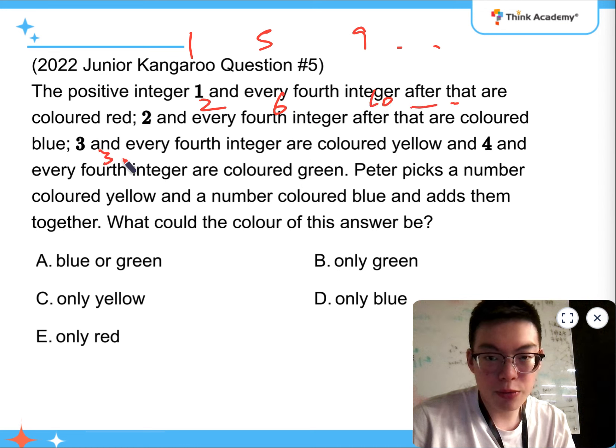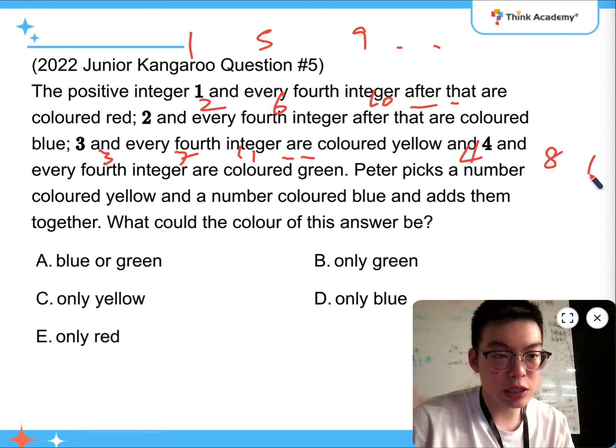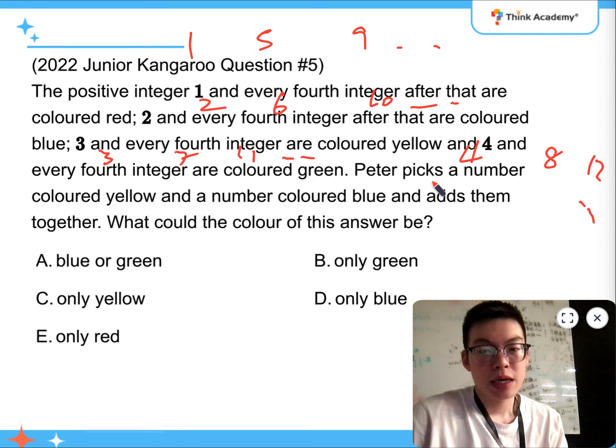3, and every 1 yellow, 3, 7, 11, and on. 4, 8, and every 4th are green, so 12, and going on.